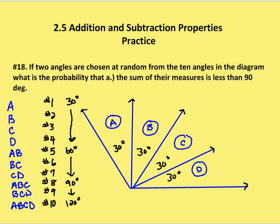I've written out the 10 different angles labeled 1 through 10. The measures of angles 1, 2, 3, and 4 are all 30 degrees. The measures of angles 5, 6, and 7 are all 60 degrees. The measures of angles 8, 9, and 10 are 90 degrees. And angle ABCD is equal to 120 degrees. I've labeled each angle with a numerical value from 1 to 10.